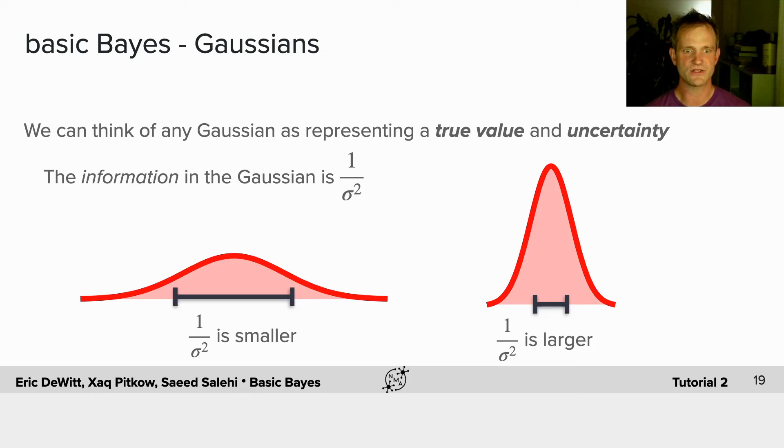That means the Gaussian on the left has less information because there's more spread around its true value, and the Gaussian on the right, which has less variance, has more information.